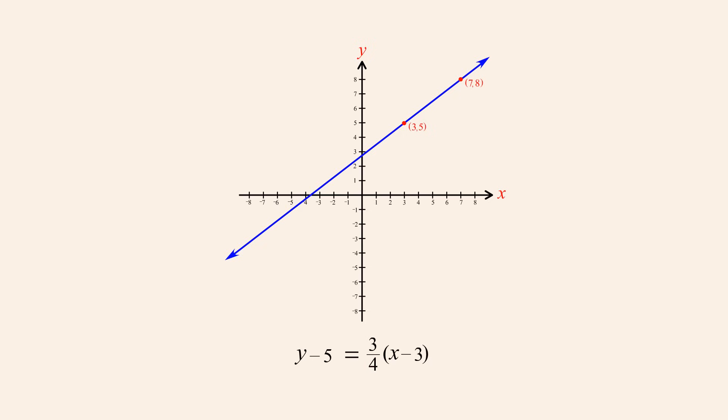Of course, we could have accomplished the same thing by first using the slope formula to calculate the slope from the coordinates of the two known points, and then substituting this value for slope into the point-slope form along with the coordinates of either one of the points.